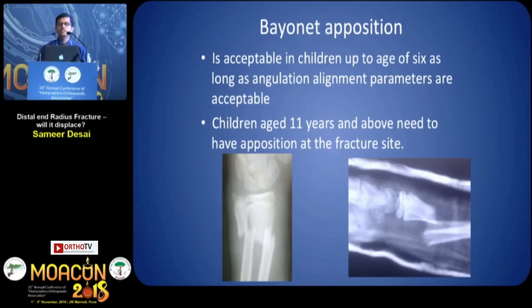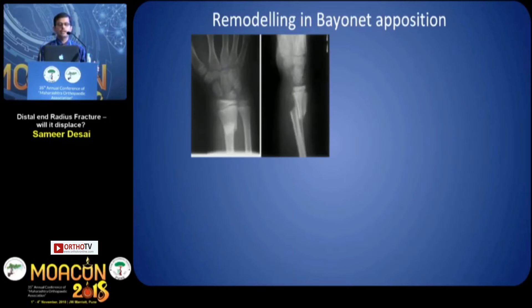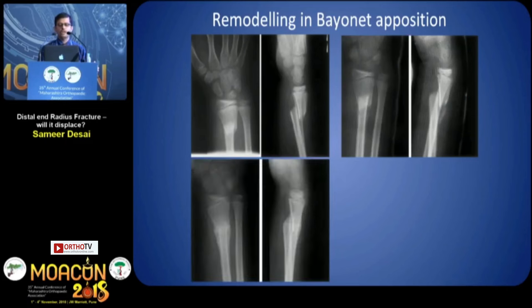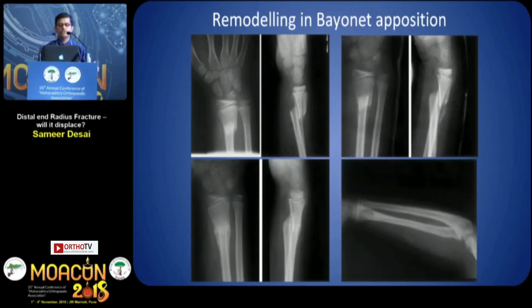What is bayonet apposition? It is acceptable in children up to 6 years, as long as angulation and alignment parameters are acceptable. However, in children greater than 11 years, you need to have apposition at the fracture site. Here is an example of a child whose fracture remodeled over a period of time.